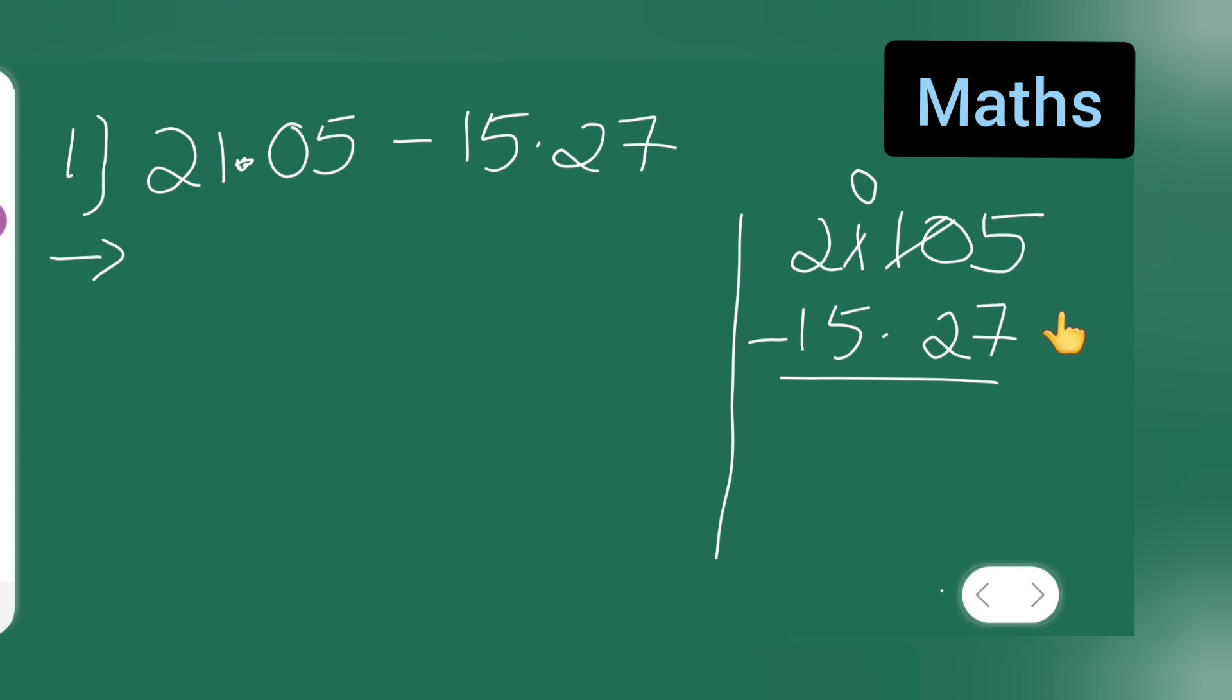So this will become 9 and this will become 15, right. So 15 minus 7 will be 8. Next, 9 minus 2 will be 7.